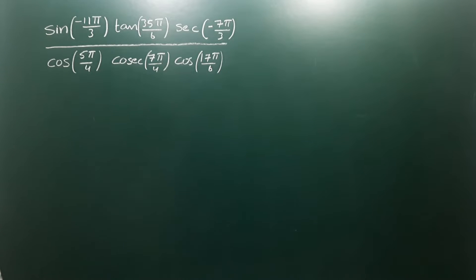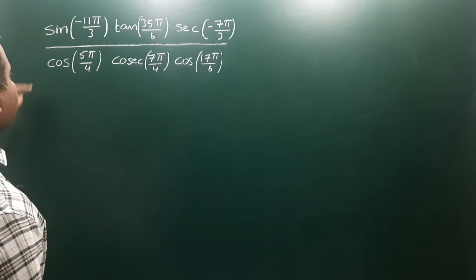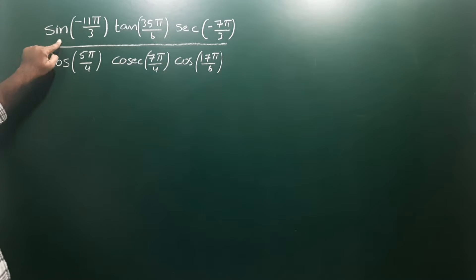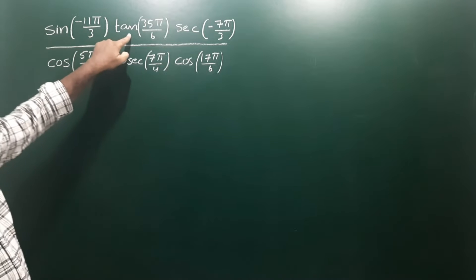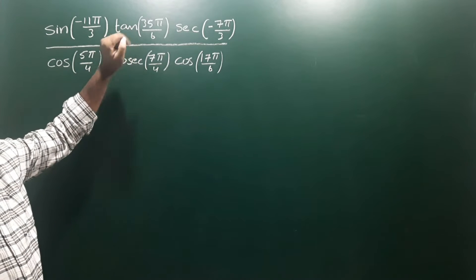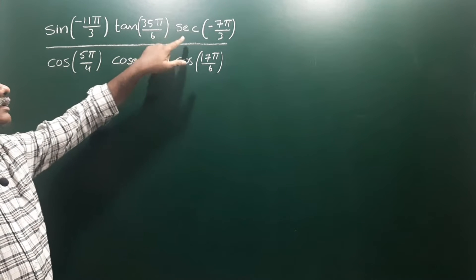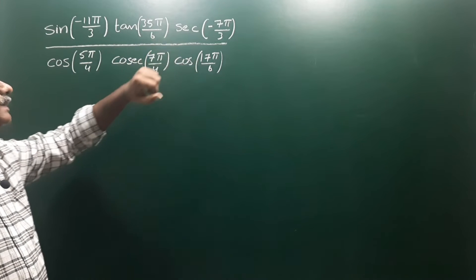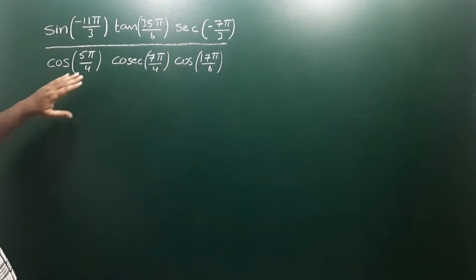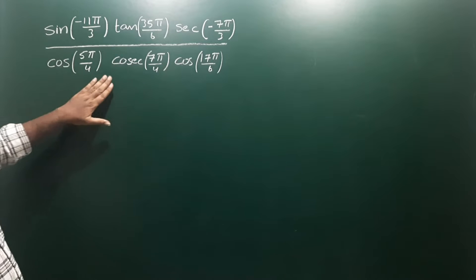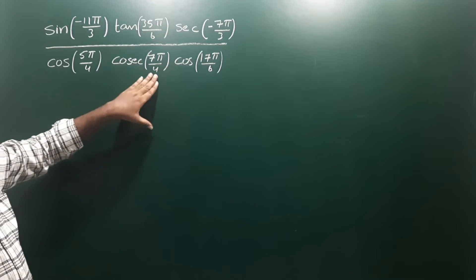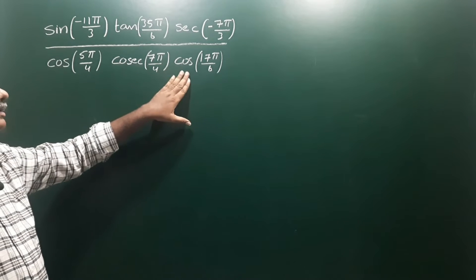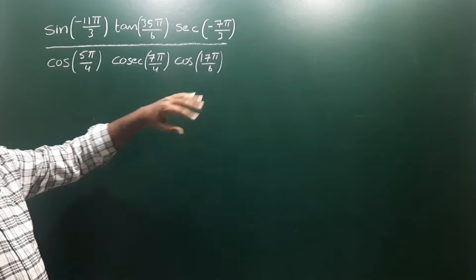Next problem: simplify sin(-11π/3) · tan(35π/6) · sec(-7π/3) divided by cos(5π/4) · cosec(7π/4) · cos(17π/6).